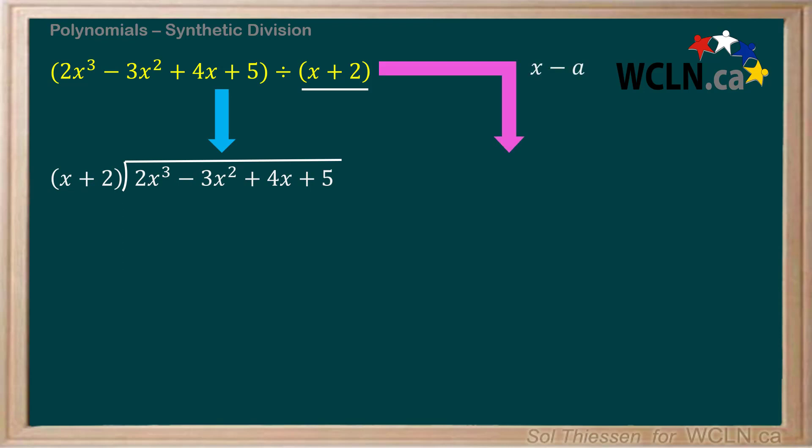X plus 2 written in this form is x minus negative 2, since subtracting a negative is the same as adding a positive. We can then set up the synthetic division, which for now probably looks like half a box with a bunch of random numbers. Don't worry if it looks a little confusing right now. Let's go over the process in depth and clear a few things up.